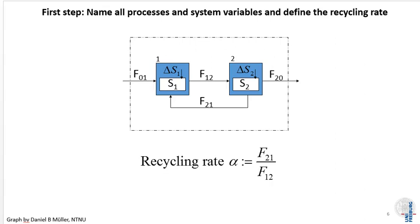In the first step of the system solution, we name all processes and system variables, and we actually define what we mean by the recycling rate. In this figure created by Daniel Müller, you can see that each flow, each stock change, and each stock has a symbol that we will use in our subsequent calculations. We have also specified the recycling rate, which we denote by alpha, defined as F21 divided by F12. It is the flow that goes back from consumption to production divided by the flow from production to consumption.